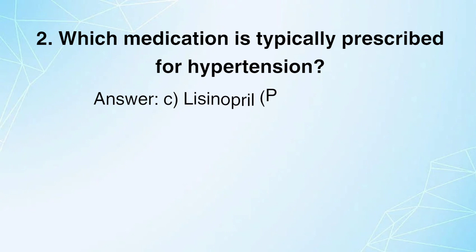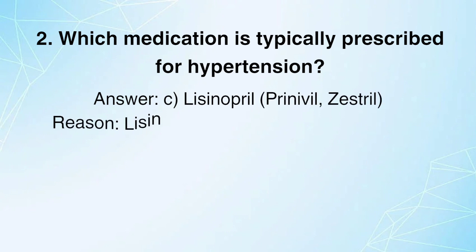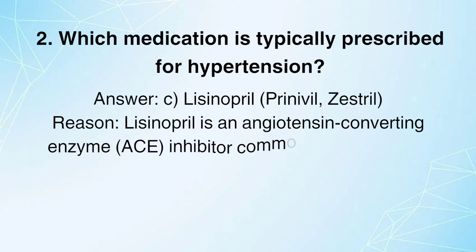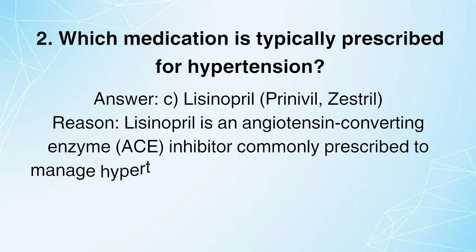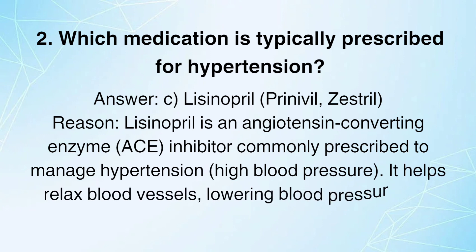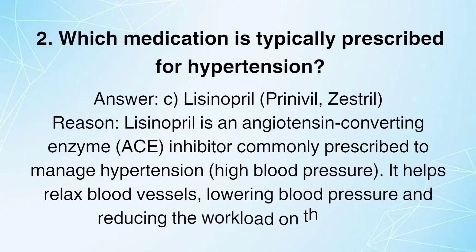Lisinopril (Prinivil, Zestril). Reason: Lisinopril is an angiotensin-converting enzyme (ACE) inhibitor commonly prescribed to manage hypertension (high blood pressure). It helps relax blood vessels, lowering blood pressure and reducing the workload on the heart.